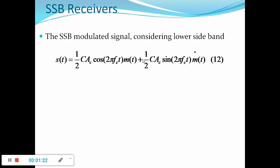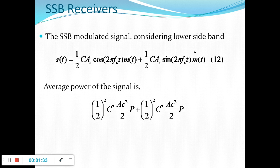If we are choosing the upper sideband instead, we will have a minus sign. The average power of this signal component is the mean square value of S(t), which equals (1/4)·C²·Ac²·P, where Ac²/2 is the mean square value of Ac·cos(2π·Fc·t) and P is the mean square value of m(t). Summing both terms gives C²·Ac²·P divided by 4.